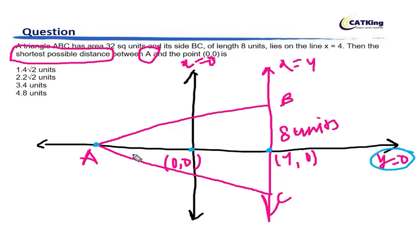If this is being minimized, in this case what happens is that the area is 32, which basically means that half into BC into AD is given as 32. Now BC we know is 8, so AD must be 8 as well. Now AD is also 8.